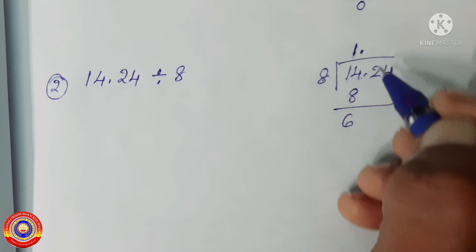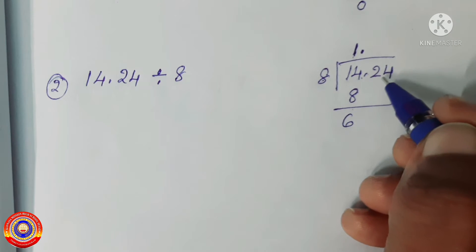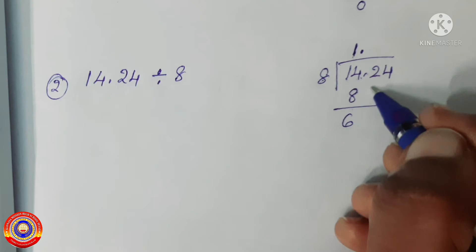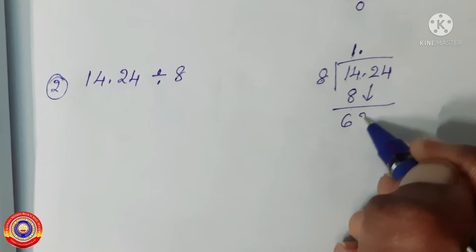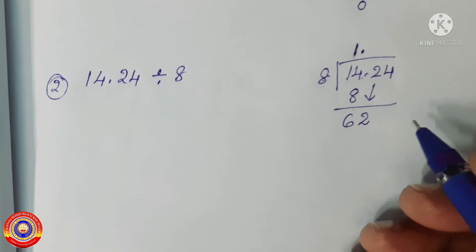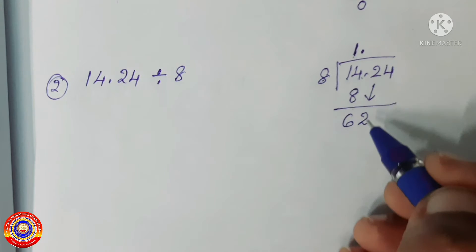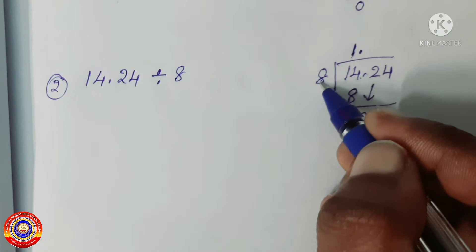Before we take the number in the tenth place, we have to add 1 decimal point in the quotient. Then take the number in the tenth place — 6 will become 62. Next, 62 divided by 8: how many times?